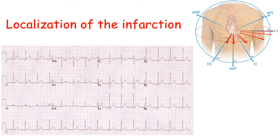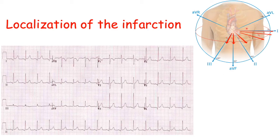Another important thing we need to know about ECGs is how to localize the site of infarction — whether the heart attack is happening in the inferior, anterior, or lateral portion of the heart. An ECG works with 12 leads that show different views of the heart. This image shows the vectors of an ECG, and you can see leads 3, AVF, and 2 showing the inferior portion of the heart.